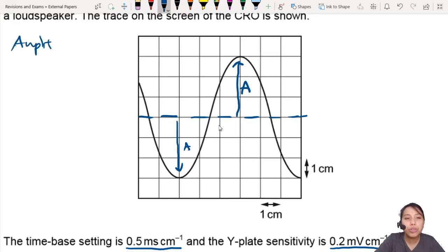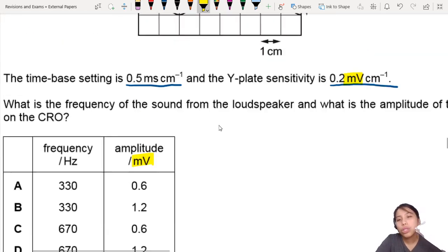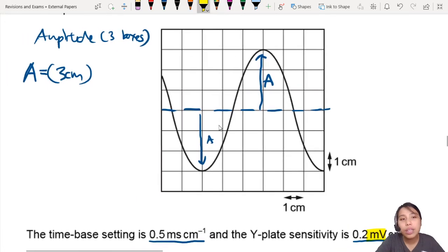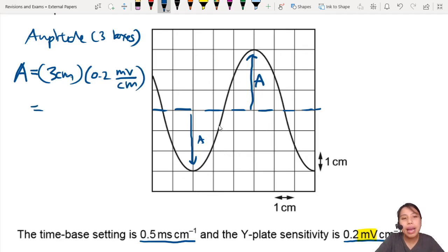The amplitude is 3 boxes. And what is 3 boxes? How many cm is that? We know it's 3 cm. But we need amplitude in terms of millivolts. Especially if you look at the answer, all the amplitudes are in millivolts. So you need to use the Y-plate sensitivity setting to convert the screen's cm into millivolts. So you multiply it all. So 0.2 millivolt each cm. And you see that the cm unit nicely will cancel out. So all that you're left with is 3 times 0.2, 0.6 millivolt. We found one thing.